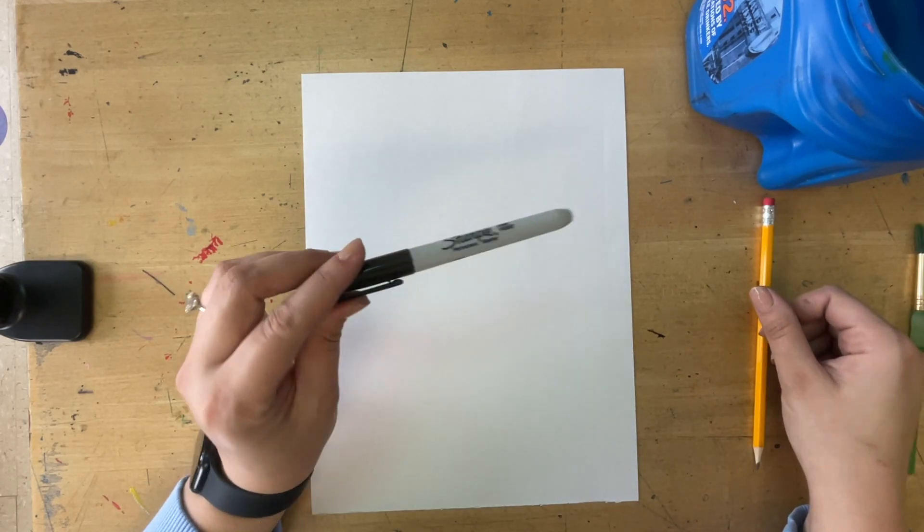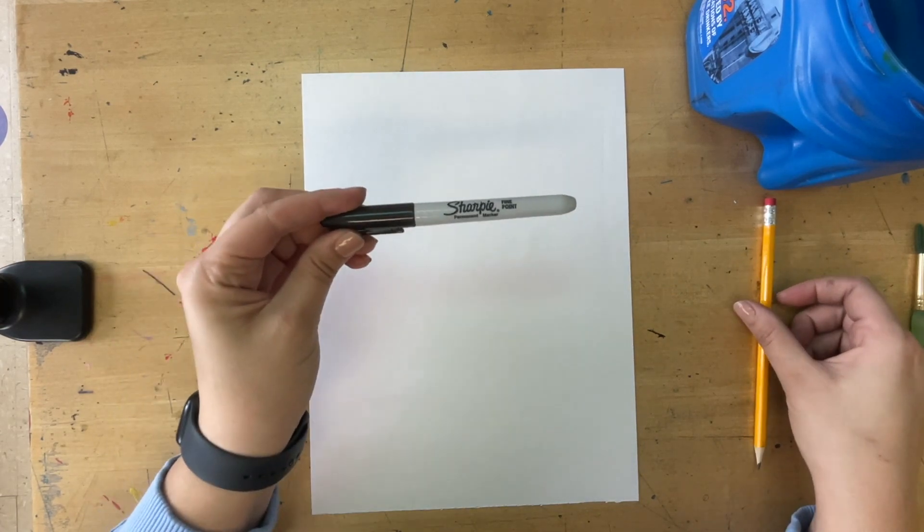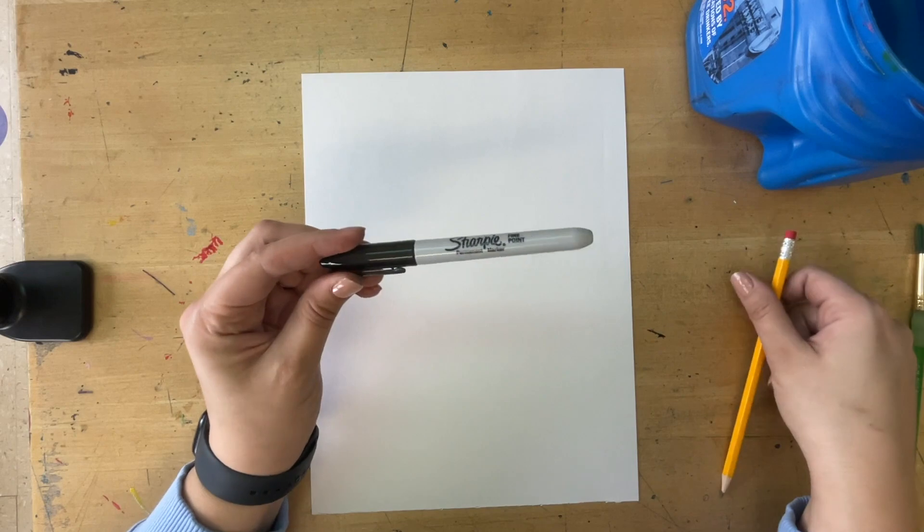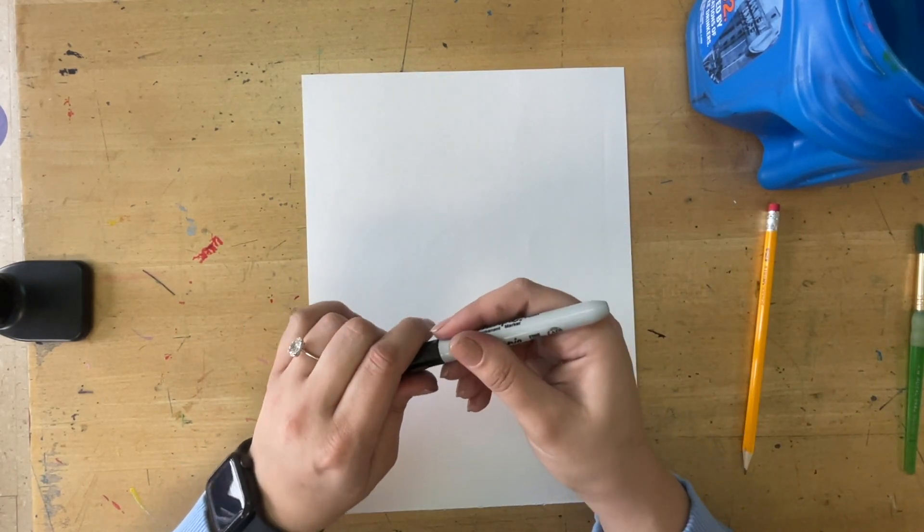We're going to be making our lines using Sharpie, and Sharpie is permanent. So if you're nervous about using the permanent Sharpie, you can always do pencil first and then trace over Sharpie second. I'm going to go in straight with Sharpie because I think you guys will be able to do it.